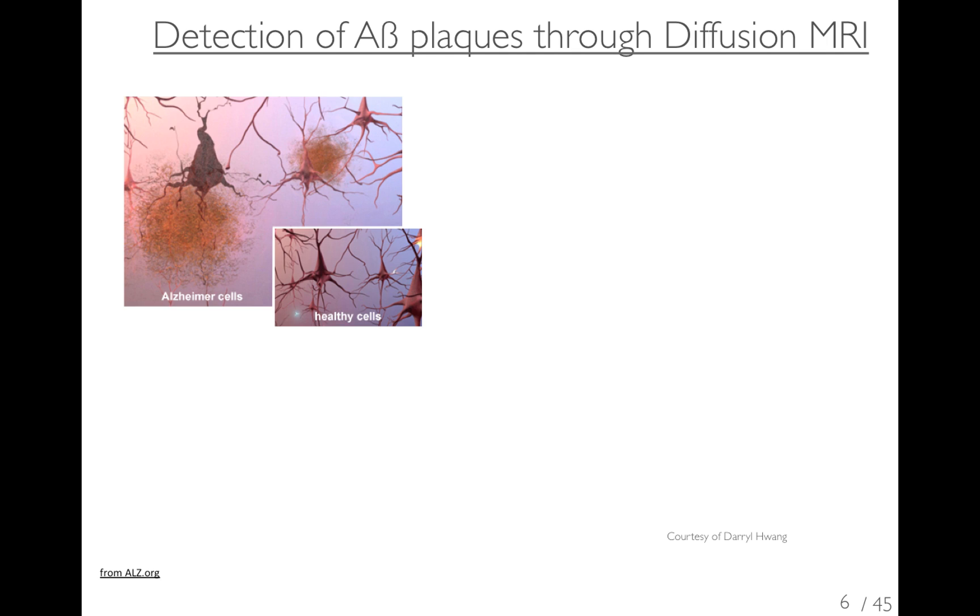So just to summarize what I've said so far, our goal is to map A-beta related disruptions in the brain, specifically in the white matter, through diffusion tensor imaging.